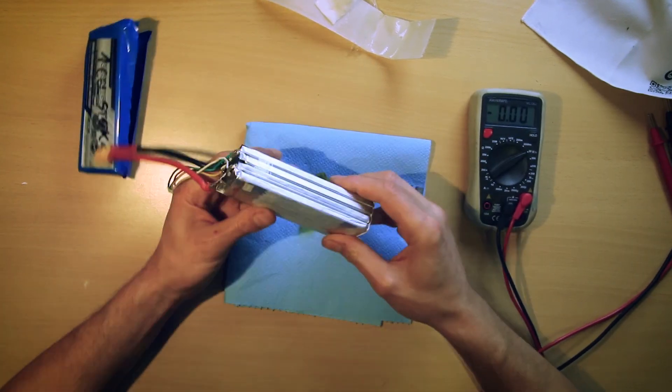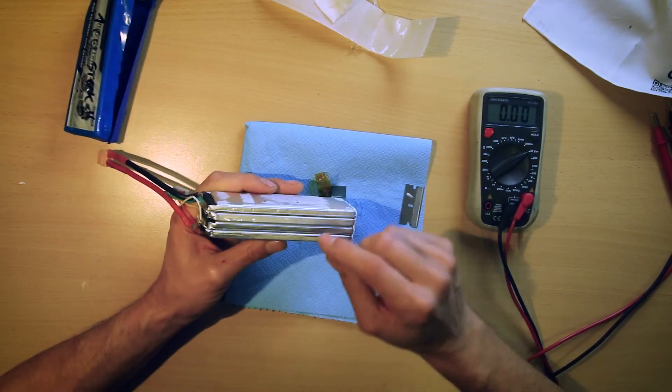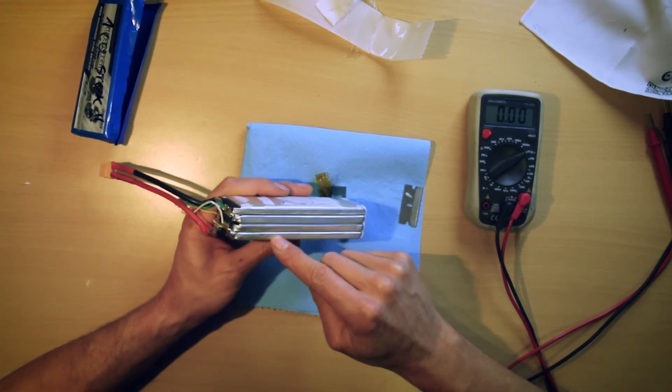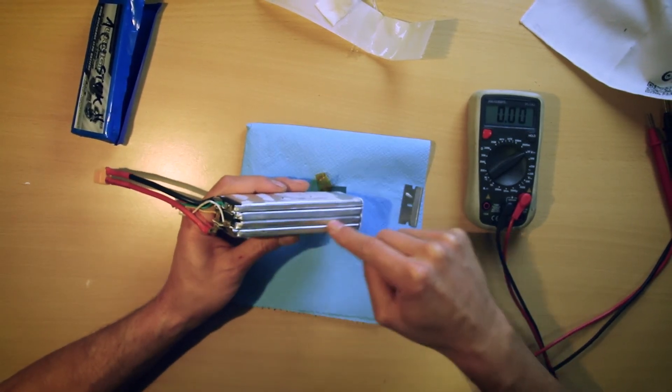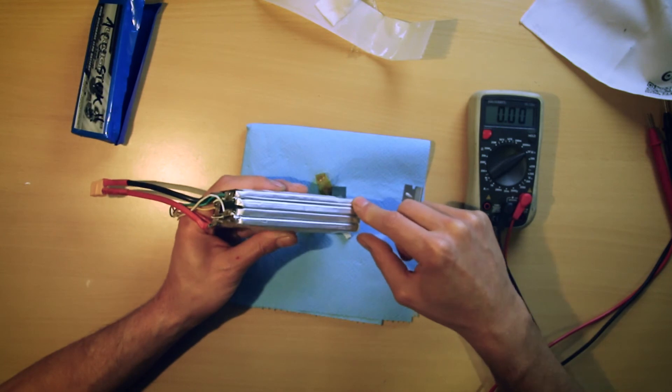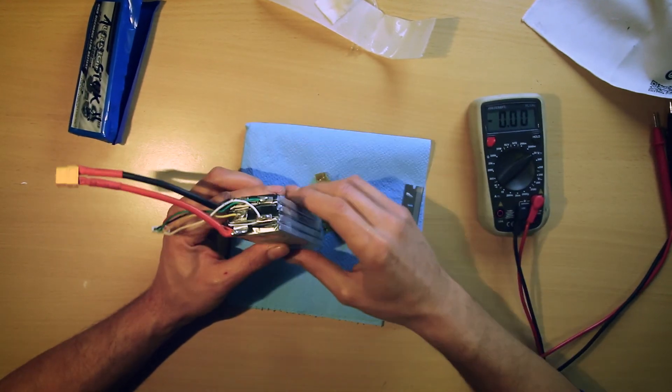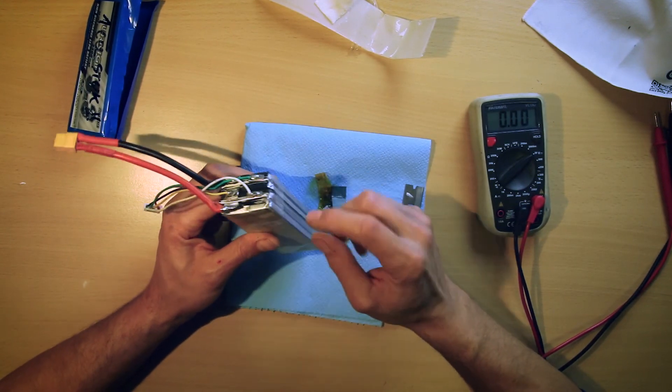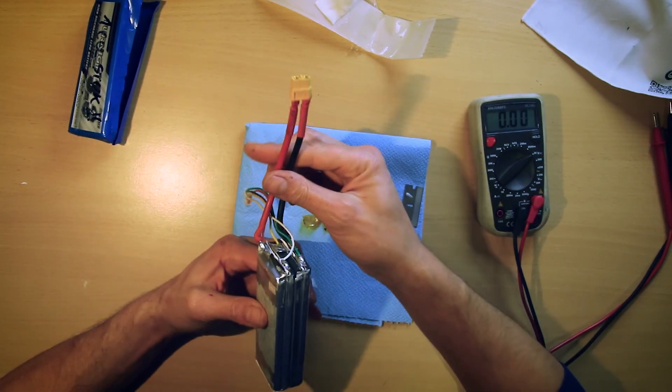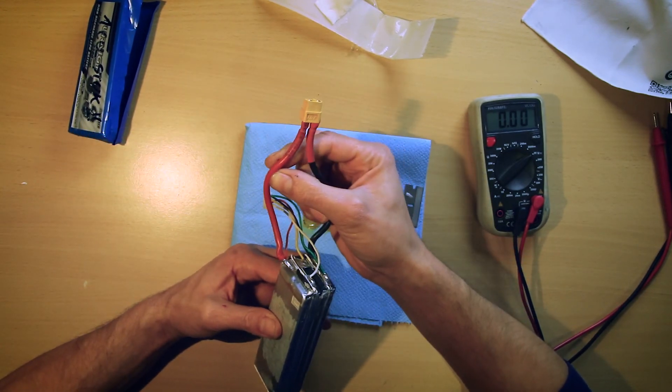This is a 4S battery, a 4 cell battery. And you can clearly see, it has 1 cell, 2 cell, 3 and 4 cells. So you have the combined voltage of the 4 cells. And this is the black and the red wire right here.